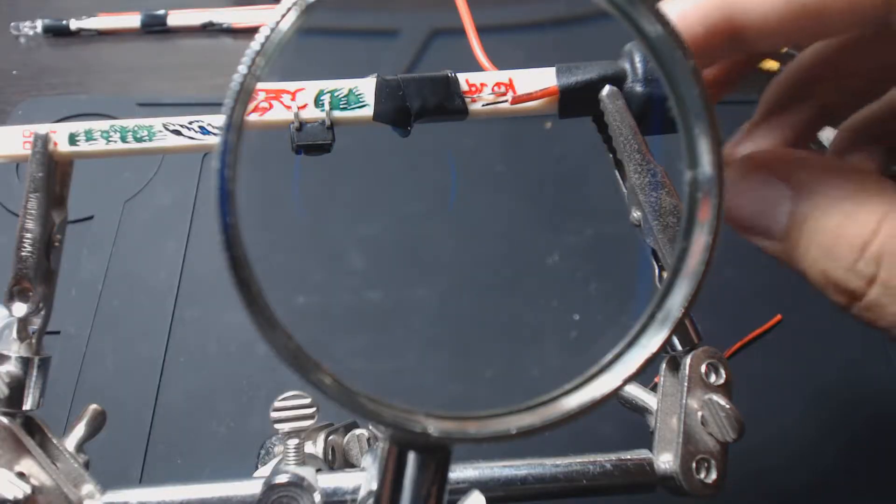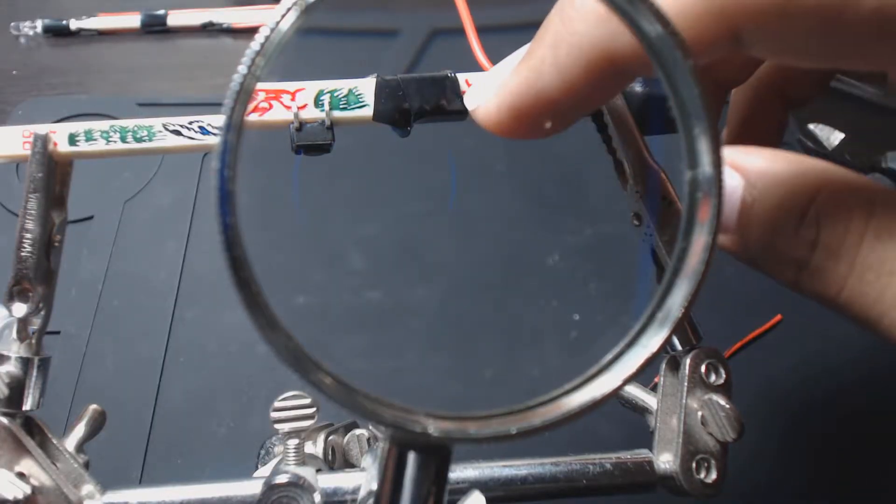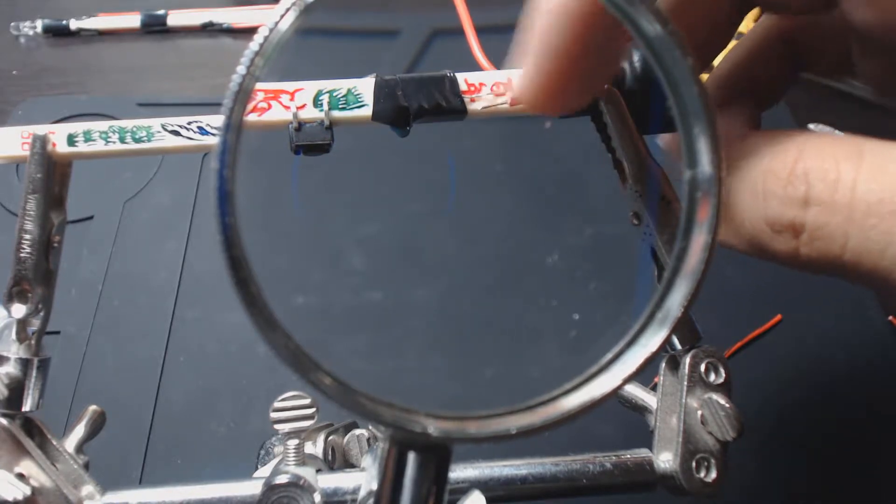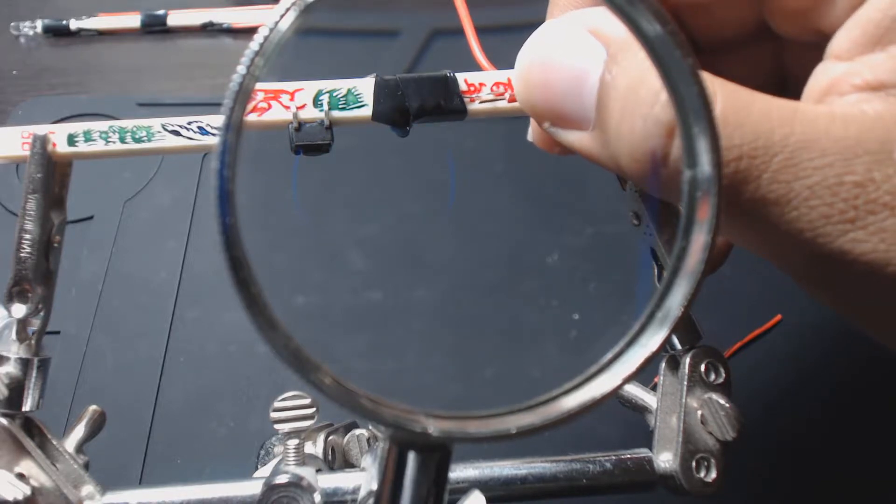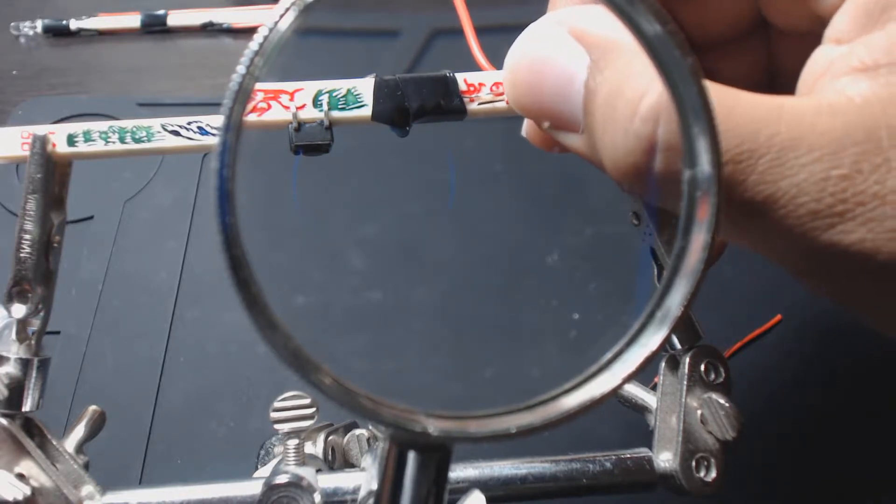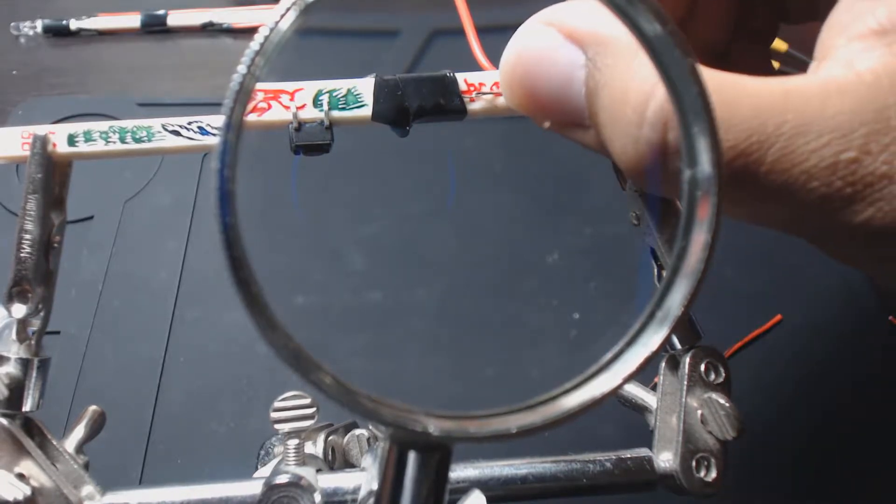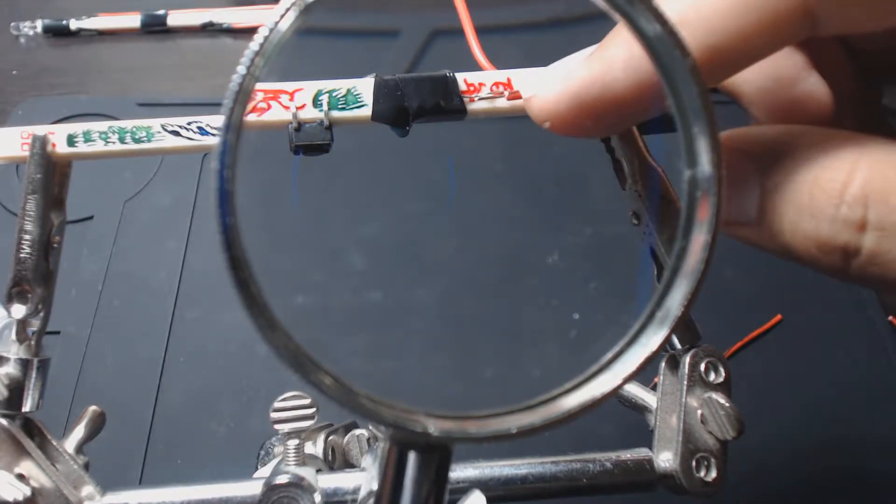Alright, so I cut and strip the other wire, and then you can kind of see the resistor popping out here as well. Electrical tape is your friend, whether you're using it as the permanent solution or just temporary holding. It is very handy.